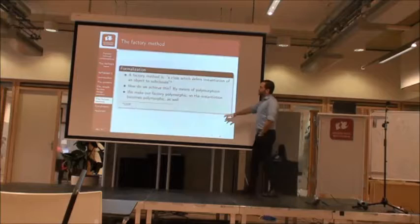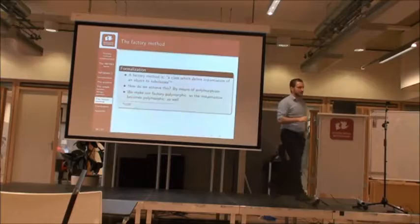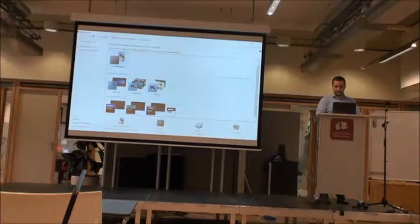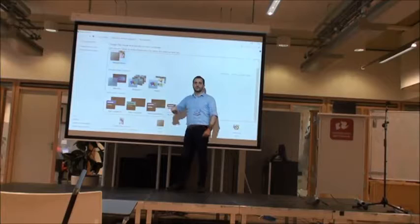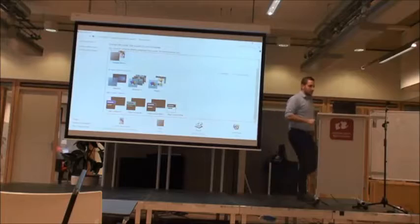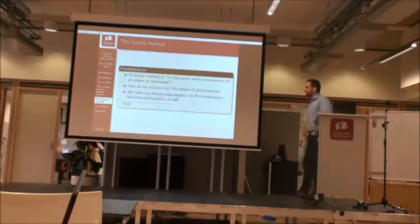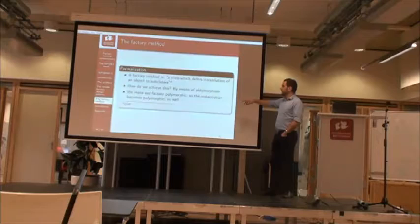What does the author say about the factory method pattern? It defers the instantiation of an object to subclasses — to the concrete classes. So the parent says: I don't know what to create, so I defer the decision of what to instantiate — high contrast window, plastic style window, etc. — to the concrete subclasses. This is achievable only through polymorphism. So we make the factory itself polymorphic — the instantiation becomes polymorphic.